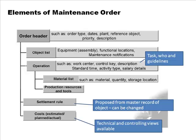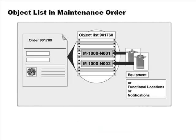The task section covers who is going to do the task, which work center, any guidelines to be performed, and settlement rules. The settlement rule is proposed from the master record of the object but can be changed — that is, to whom is the maintenance work cost charged. By default, the technical object bears the cost, but this can be changed. So here you have the infrastructure for collecting costs, controlling, and estimating.